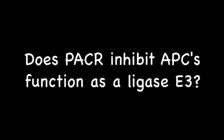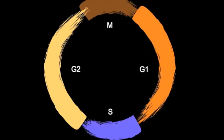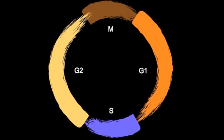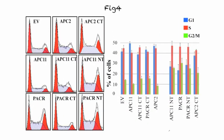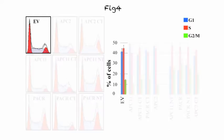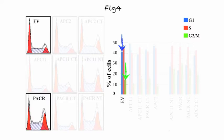This raised an interesting question: does PACER inhibit APC's function as a ligase E3? If so, it is possible that normal cell cycle may be disrupted as a consequence. To find out, fluorocytometry was used to compare cell cycle profiles of normal cells against stable cell lines expressing PACER. Normal cells accumulate more in G1 phase and less in G2M, whereas PACER-expressing cells accumulate more in G2M than in G1, a profile consistent with impaired APC function.